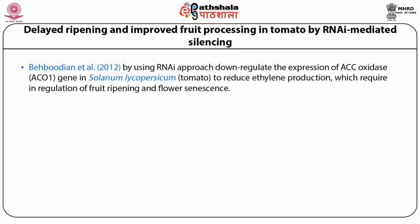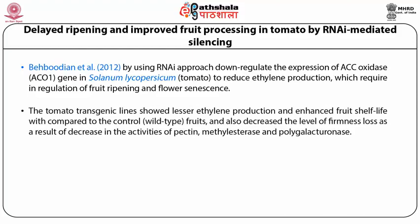In 2012, Bahbudian et al., using an RNAi approach, down-regulated the expression of ACC oxidase ACO1 gene in tomato to reduce ethylene production, which is required in the regulation of fruit ripening and floral senescence. The tomato transgenic lines showed lesser ethylene production and enhanced fruit shelf-life compared to control, and also decreased the level of firmness loss as a result of decreased activity of pectin methylesterase and polygalacturonase.